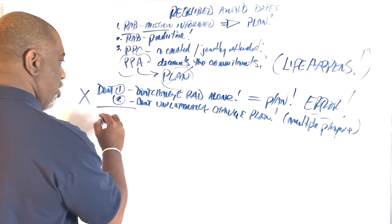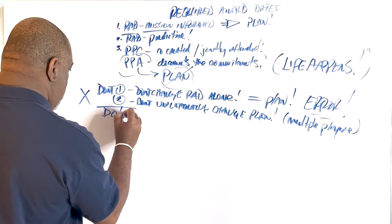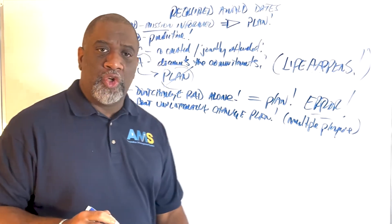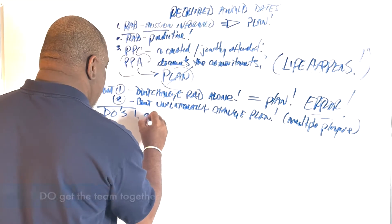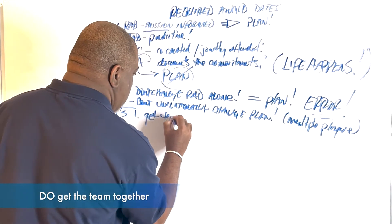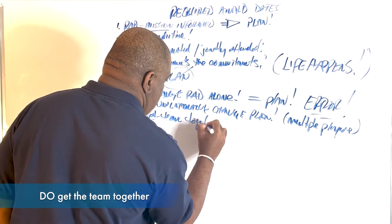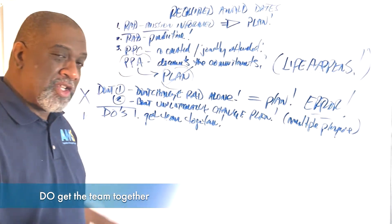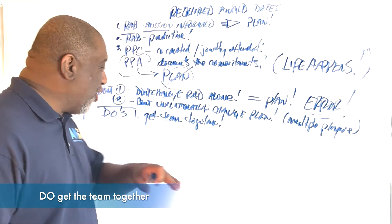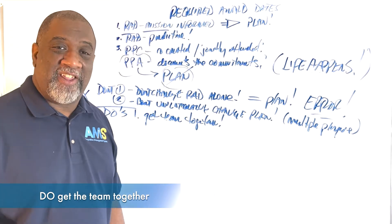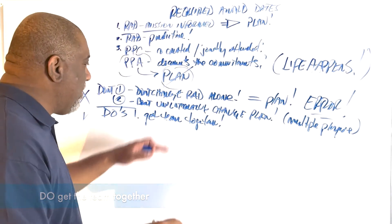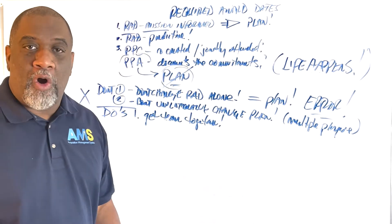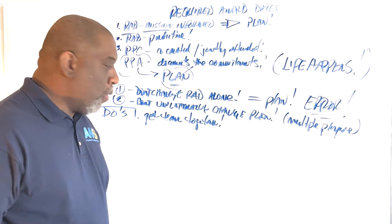Here's some things you can do. Let's talk about the do's. The first do is let's get the team together. This challenge wasn't created alone, so it won't be solved alone. You got to get the team together to examine this plan and see what went wrong.